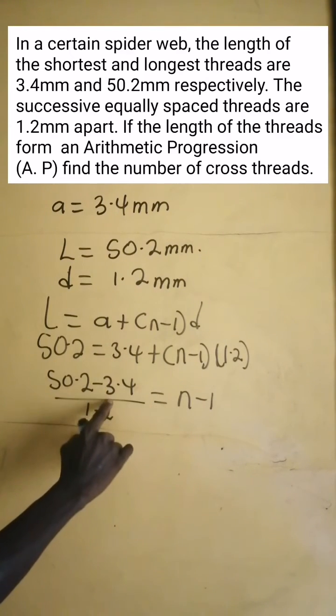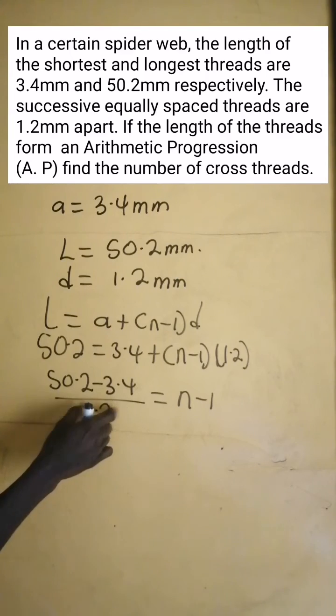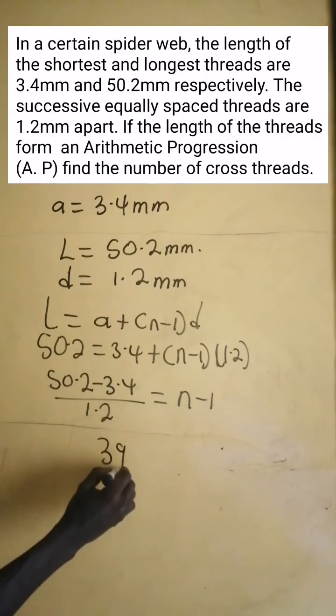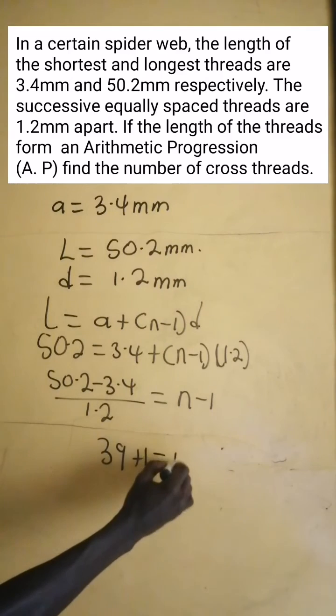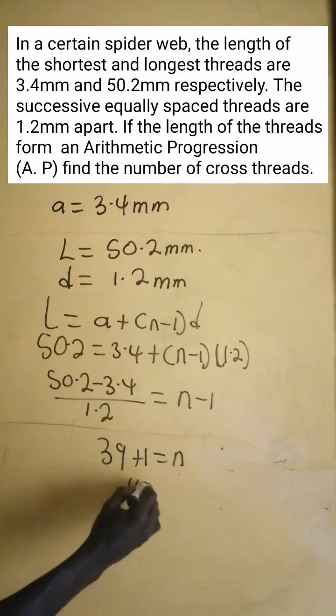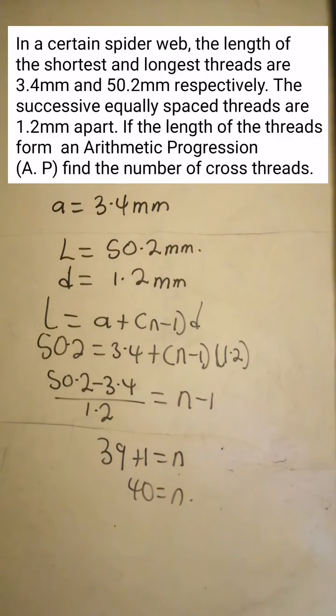If we put this in the calculator, this gives 39. Then we add 1 to it, which gives n equals 40. Hence, the number of cross threads are 40.